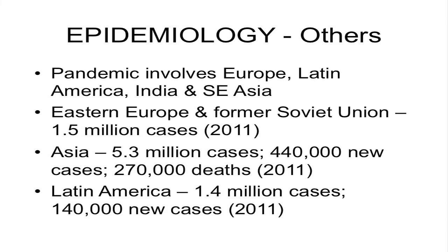Other countries: pandemics are ongoing in Europe, Latin America, India, Southeast Asia, Eastern Europe, and the former Soviet Union — about 1.5 million cases in 2011. Asia has 5.3 million cases, 440,000 new cases, and 270,000 deaths. Latin America has 1.4 million cases and 140,000 new cases. That's a bit about where HIV is found, how many cases there are, and what's going on. Let's look at the pathology.